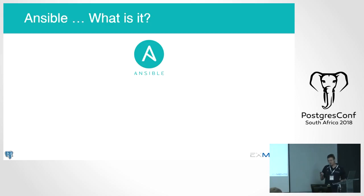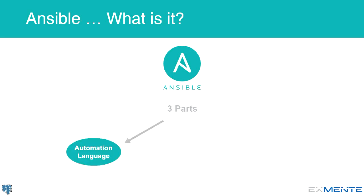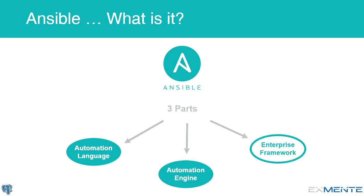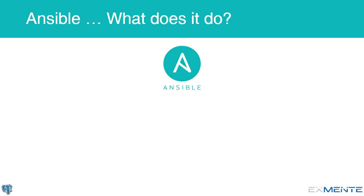So what is Ansible? It contains three major parts. First is the automation language, which is based on YAML. Then you've got the automation engine that processes the scripts you write in that language to automate your sysadmin tasks. There's also an enterprise framework called Tower — if your implementations become large and enterprise-wide that's a good place to go, but we've never tried it so I won't comment on it.